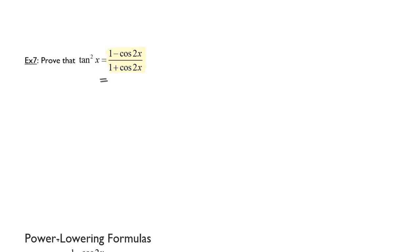Welcome to part three on this section where we're looking at double angle formulas and using them in our identities. I'm going to go ahead and simplify the right hand side of this identity that we need to prove: that tangent squared of x is equal to 1 minus cosine of 2x over 1 plus cosine of 2x.